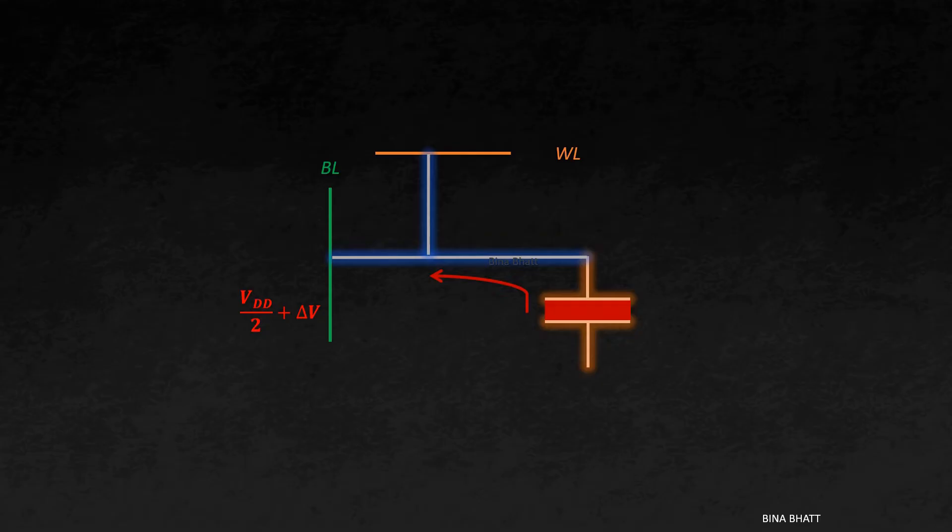Finally, this small change in bit line voltage is detected and further amplified by a differential sense amplifier. An increase in the voltage gets amplified to VDD.